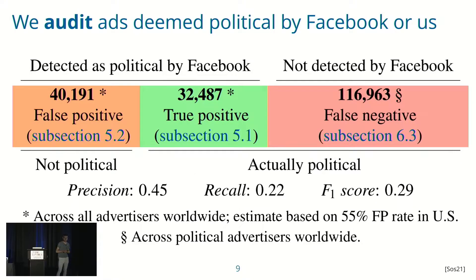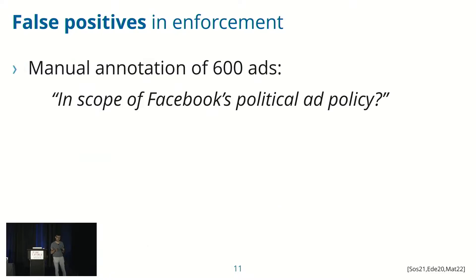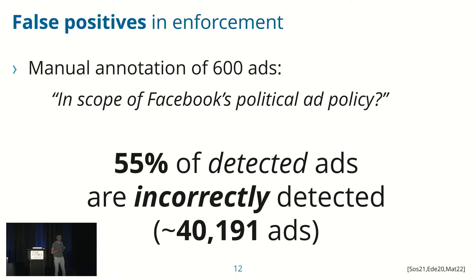This table already summarizes our results. We tried to classify these 189,000 ads, and I'll go into more detail on the two types of errors we observed. Starting with the false positives: these are ads where Facebook detected the ad as political even though it was not declared as such by the advertiser, but that according to our analysis is actually not political in nature. We used a manual annotation of 600 ads. Based on this annotation, we found that 55% of the ads they detected were incorrectly detected — when extrapolated to the rest of our dataset, that's around 40,000 ads.